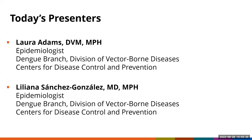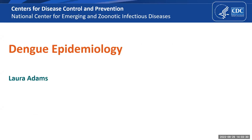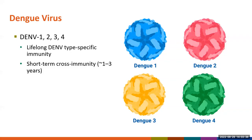We'll start with a background on dengue epidemiology. Dengue is caused by dengue viruses 1 through 4, sometimes called serotypes, all of which can cause disease. Infection with the dengue virus leads to lifelong type-specific immunity against the infecting dengue virus and short-term cross-protective immunity to the other dengue viruses, usually for about 1 to 3 years.